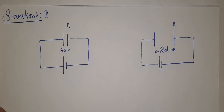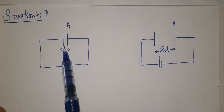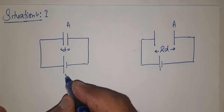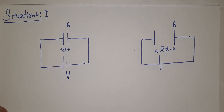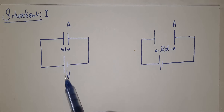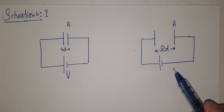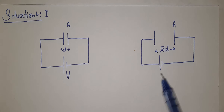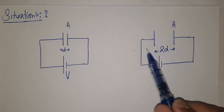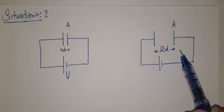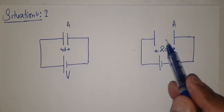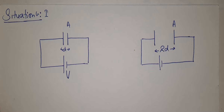Situation one: A capacitor with plates having separation D, plate area A, and a battery with potential difference V is applied across the plates of the capacitor. The capacitor is charged. After that, in the second situation, with the battery still connected in the circuit, the separation between the plates is increased to double — made 2D.